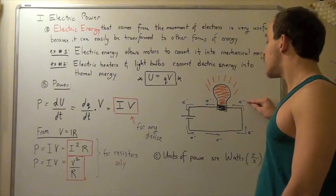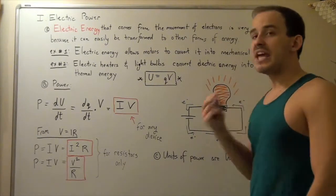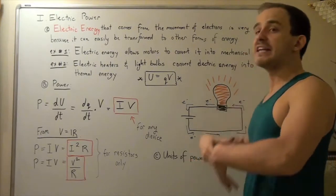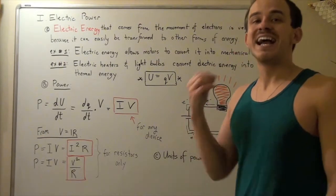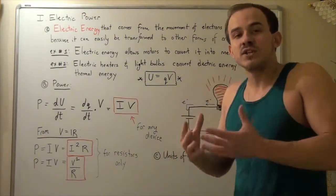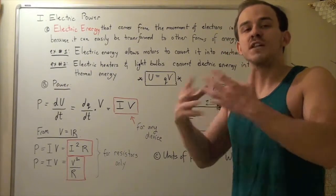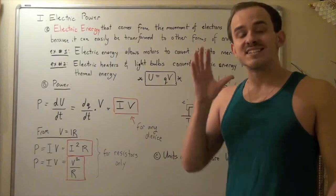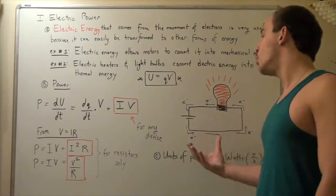So when the electrons move through our light bulb, they move through the filament found in our light bulb, and that filament increases kinetic energy, and that increase in kinetic energy allows our filament to release light or energy in the form of light, and that's exactly what allows our light bulb to glow.